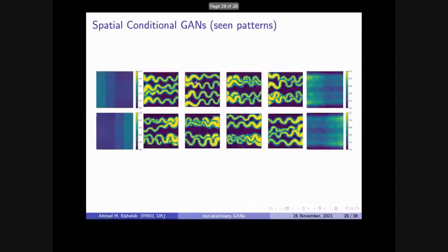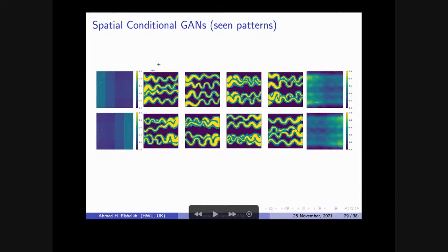We trained the spatial conditional GAN with many tricks because the condition is now a map of four by four. We tried to generate seen patterns: this is the conditional map added to the generator input. Large values, small values — we end up generating different images, always with thick channels transitioning to thin channels. When we average these realizations, we end up with a map similar to the input condition.